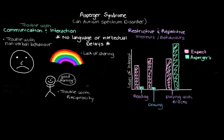Because there aren't really any apparent delays in language with kids with Asperger's, it could take quite a while to figure out that a kid has Asperger's and to make the diagnosis. And this is indeed the case — for a lot of kids with Asperger's, it isn't picked up until later when they're put into a demanding social situation, like a new school environment.